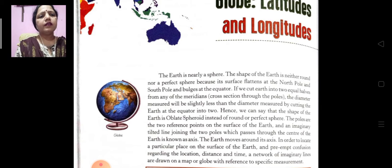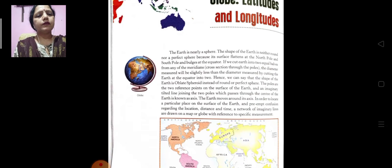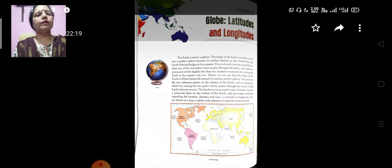If we cut earth into two equal halves from any of the meridians, the diameter measured will be slightly less than the diameter measured by cutting the earth at the equator into two halves. Hence we can say the shape of the earth is oblate spheroid instead of round or perfect sphere.